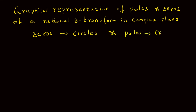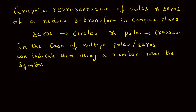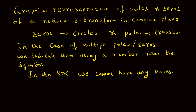In the case of multiple poles or zeros, we indicate them using a number near the corresponding symbol. Also, in the ROC we cannot have any poles.